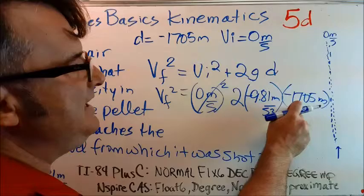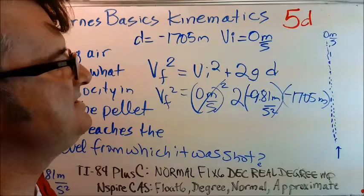We got a negative value for gravity and a negative value for distance. Negative times a negative is a positive, so we're going to be able to take the square root of a positive value. That's just beautiful.